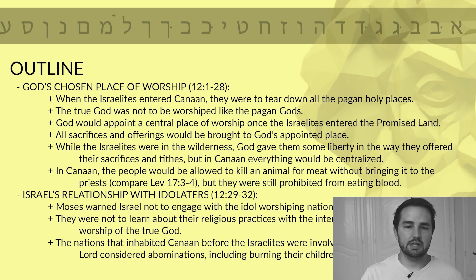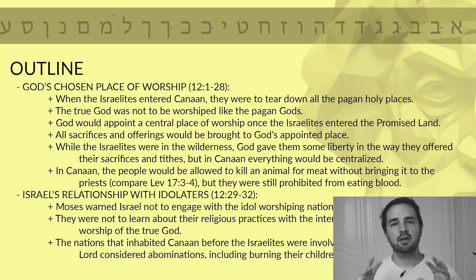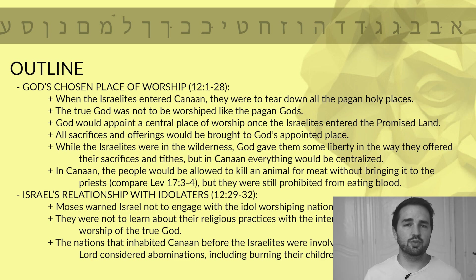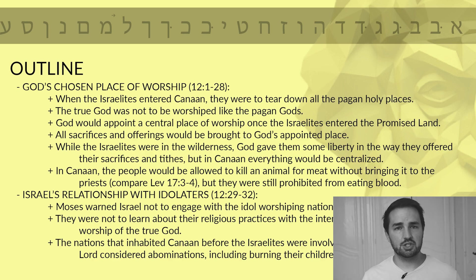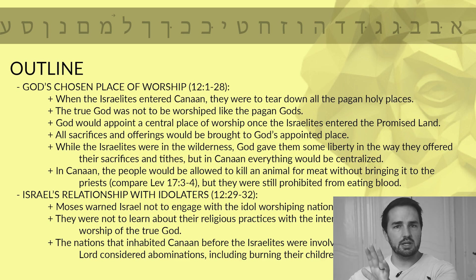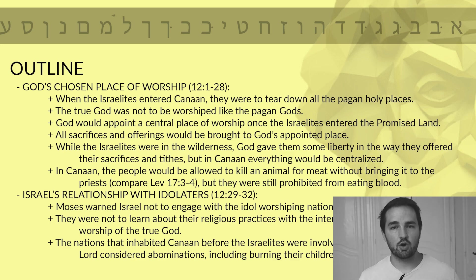We're told that while the Israelites were wandering in the wilderness for 40 years, God gave them some liberty in the way that they offered their sacrifices and their tithes. But in Canaan, everything was going to be centralized in this special location. We're also told that when they got into Canaan, they could kill and eat an animal at any time without having to bring it to the tabernacle — which is what Leviticus 17:3-4 suggests the people had to do when they were in the wilderness. But that was not going to be required any longer. If they lived far away from this central place of worship, they could kill an animal and eat it at any time. But they were still prohibited from eating the animal's blood — that is specifically called out in this text.